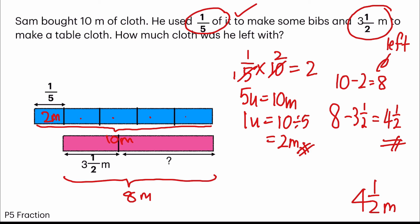Now this question involves two different parts. First would be fraction of a set, one-fifth of something, equal parts. But the second part, three and a half meters, it's not fraction of a set. It is just a part and whole.